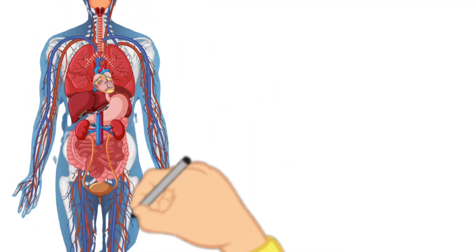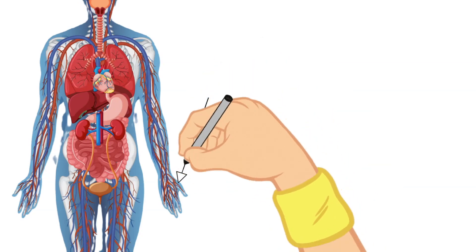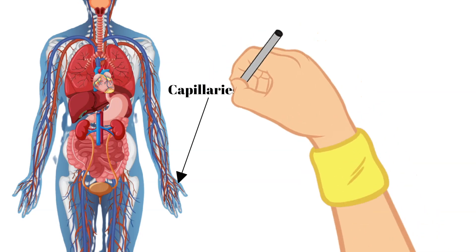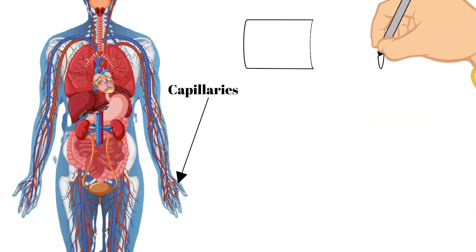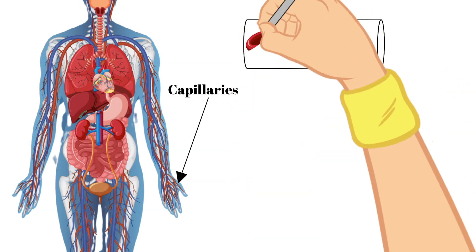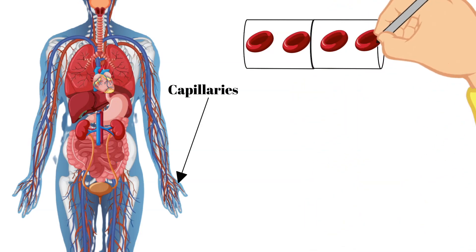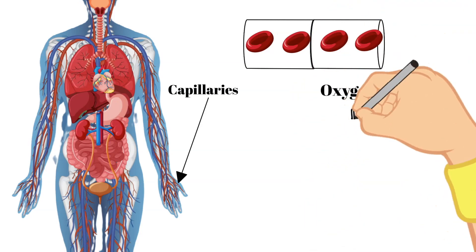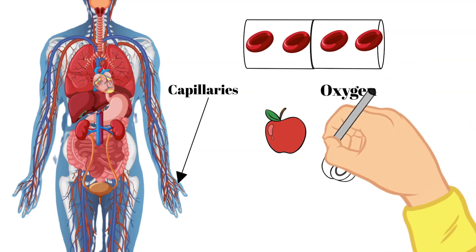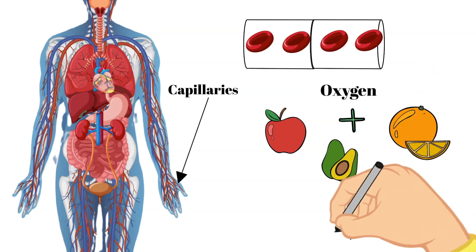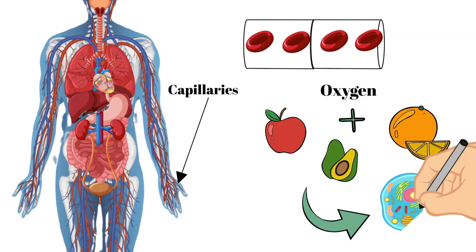The arteries eventually divide down into the smallest blood vessel, which brings us to the next part of our circulatory system — the capillaries. Capillaries are so small that blood cells can only move through them one at a time. This is where oxygen and food nutrients pass from the blood to the cells. Capillaries are also connected to veins so waste from the cells can be transferred to the blood.